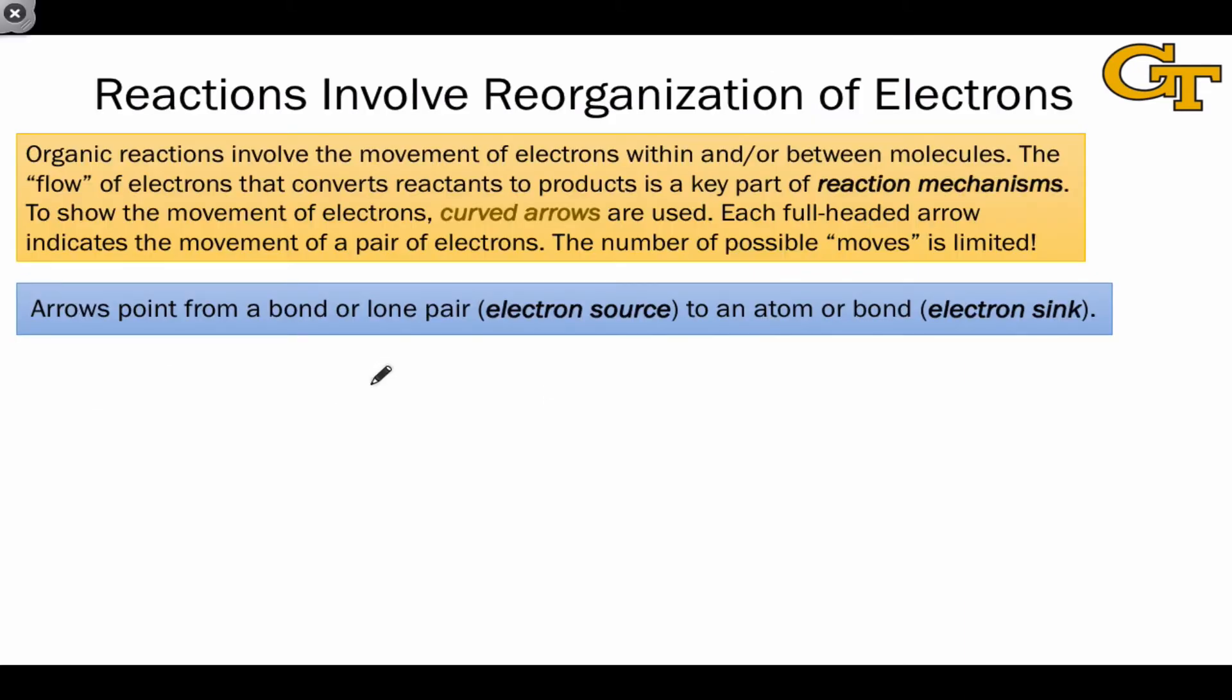The curved arrow formalism is a system that shows the movement of electrons within or between molecules. And organic reactions are really based on this flow of electrons. The reaction mechanisms that we write for organic reactions are depicted using the language of curved arrows.